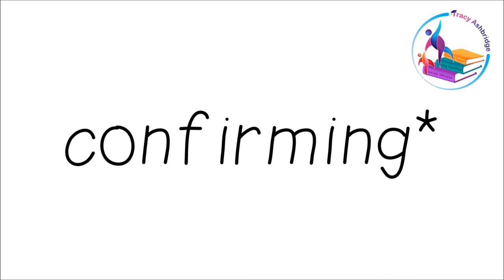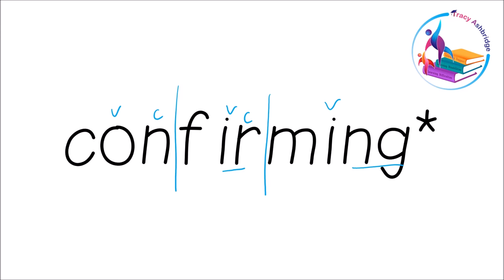Here's another one where it could go two ways. See if you can work out what the two ways could be. Way one would be 'con-fur-ming'. Way two would be to chop here because I know this is the base word and this is the suffix. And if your child can identify the base word and the suffix, then go with that — 'confirming'.